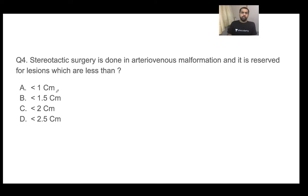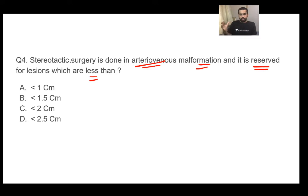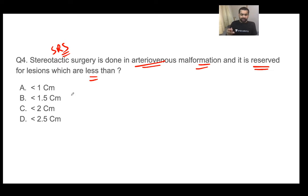The next question: stereotactic surgery is done for arteriovenous malformation and is reserved for lesions less than how many centimeters? Stereotactic radiosurgery (SRS) is one treatment option for AVM, alongside craniotomy and angiographic embolization. What is the size cutoff for stereotactic surgery when performed for AVM?